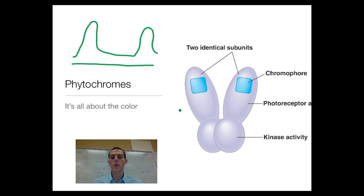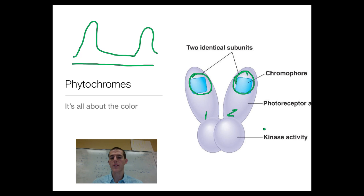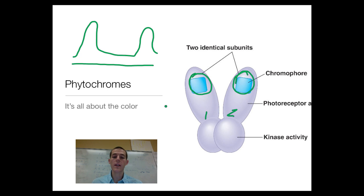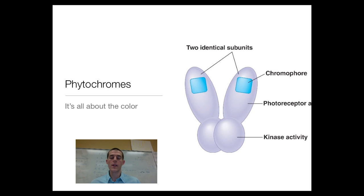Phytochromes are protein complexes with two units. They have a chromophore — the part responsible for sensing the wavelength of incoming light — and an area responsible for kinase activity, which turns other proteins on or off. As we talk about light response in plants today, these phytochromes are the business end of the deal.